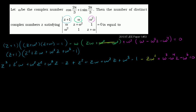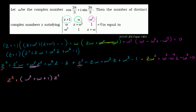Let's group terms by powers of z. We have a z³ here — that's the only z³ term. Then grouping the z² terms: we have z², ω²z², and z², with coefficients ω² + ω + 1 times z².